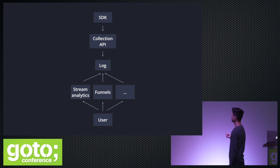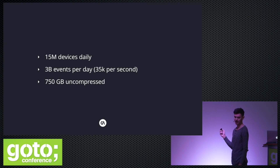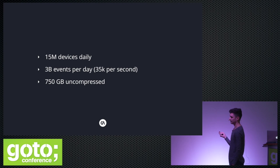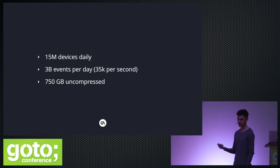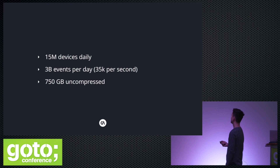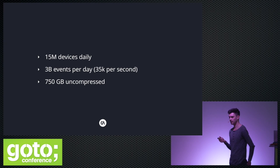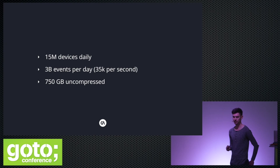Some bragging numbers, just to show this system actually works. We have around 3 billion events a day now, up from around 30 million when we went live a year ago — so it's grown 100-fold. Daily, that's 750 gigabytes of uncompressed JSON data. This is what our system turns through in one day.